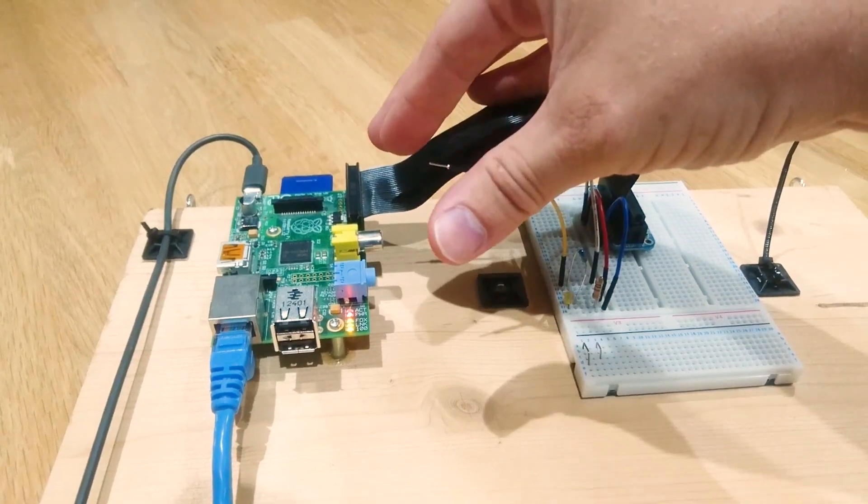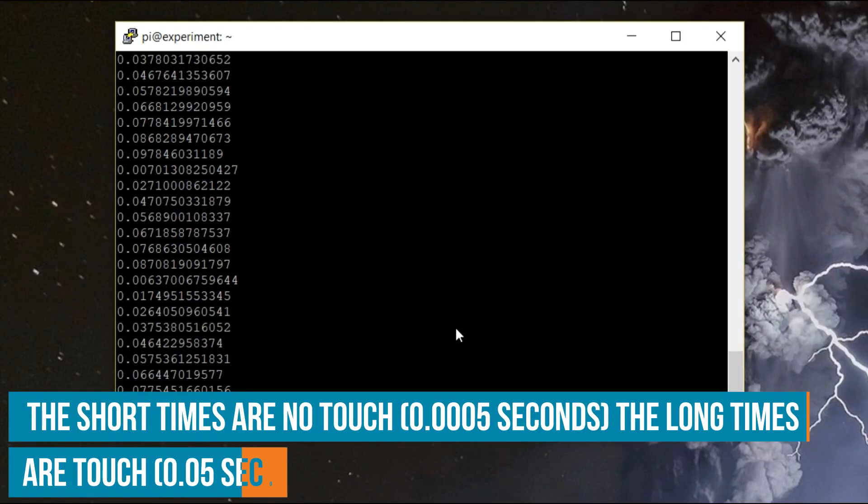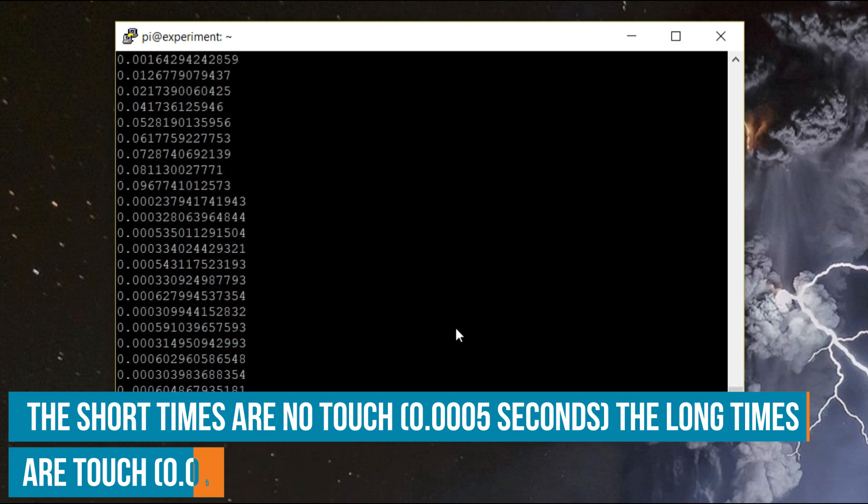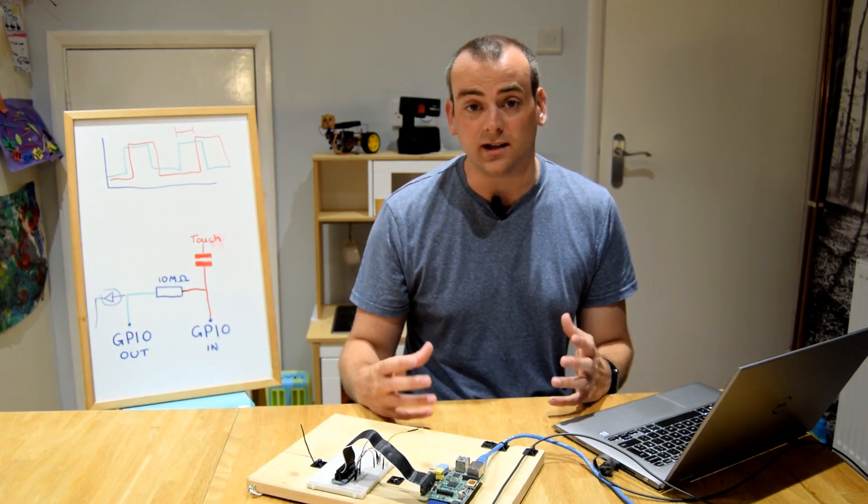As I touch the sense wire, you can see the Python script responding with the shorter and longer times. All we need to do is find out where that threshold is, and set that as the activation level for the circuit. So with that really simple script and circuit, we have the basics working of a capacitive circuit. That's all we have time for today.